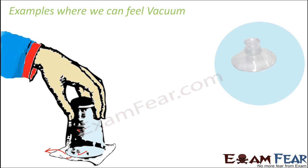Another example where you can see partial vacuum is suction caps. You would have seen these — they are often used for hanging stubs. When you stick them to a smooth surface, they get stuck very tight and it becomes very difficult to remove them. That is also due to the creation of vacuum — the space inside has vacuum, there is no air inside, so it becomes airtight. You would have heard the term airtight quite often — there are containers that are airtight so that air cannot enter and food materials will not get spoiled. So I hope you now understand what vacuum is.